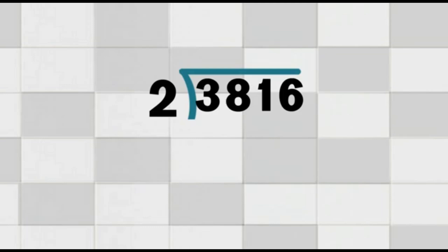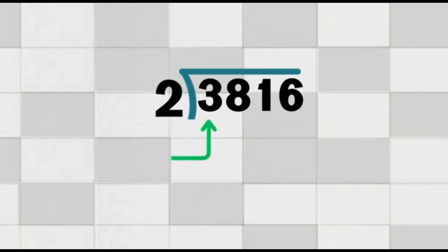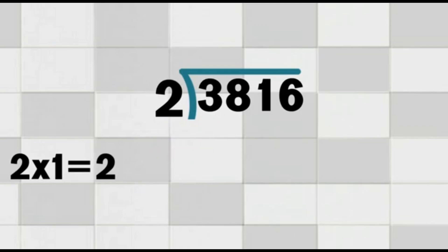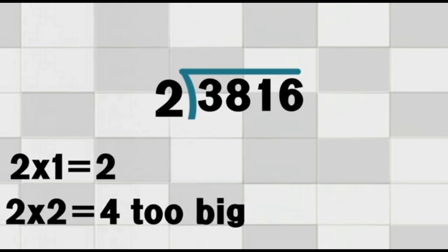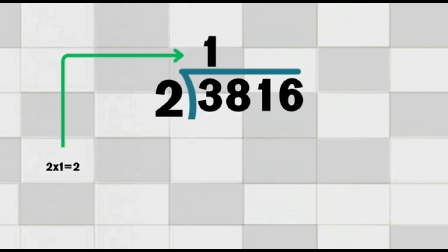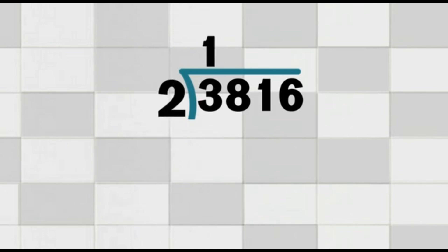Now, look at the first digit of 3,816 — that's the number 3. We ask: how many times does 2 go into 3? 2 goes into 3 one time, because 2 times 1 equals 2, and 2 times 2 equals 4, which is too big. So, we write 1 on top of the division bracket, right above the 3. Multiply: 1 times 2 equals 2. Subtract: 3 minus 2 equals 1. We write the 1 under the 3.